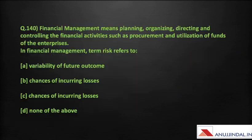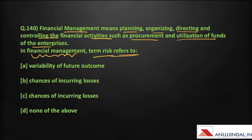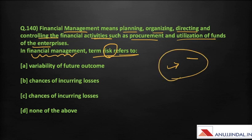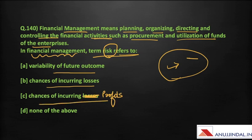The last question: financial management means planning, organizing, directing, and controlling financial activities such as procurement and utilization of funds of an enterprise. In financial management, the term risk refers to — risk is anything where we expect something in the future but it does not happen in direct tandem with our expectations, and there are some variations. Option A says variability of the future outcome, B says chances of incurring losses, and C says chances of incurring profits. The basic meaning of risk is the variability of the future outcome — when we are not sure that what we expected will turn out to be true.